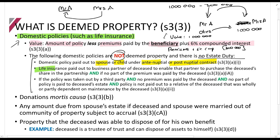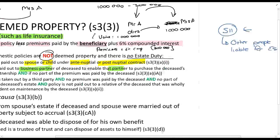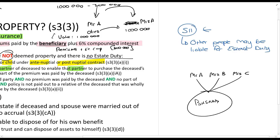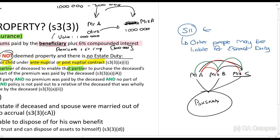Another exception: life insurance paid out to a business partner of the deceased to enable that partner to purchase the deceased's share in the business or partnership, provided no part of the premium was paid by the deceased. For example, Mr. A and Mr. B are business partners. Mr. B takes out life insurance on Mr. A's name, and Mr. A takes out life insurance on Mr. B's name. If Mr. B dies, Mr. A receives the payout and uses it to buy Mr. B's 50% share of the business.